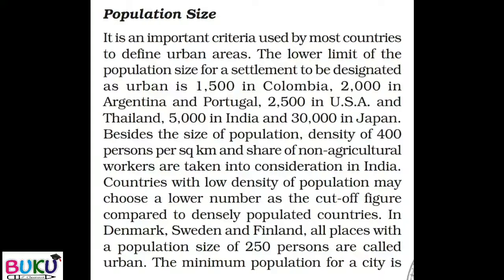जो lower limit decide की गई है urban settlement के लिए — Colombia में अगर 1500 की population हो जाती है तो उसको urban area में count कर लेते हैं। Argentina और Portugal के लिए 2000, USA और Thailand के लिए 2500, India में 5000, और Japan में 30,000 की population को urban settlement की category में consider करते हैं।